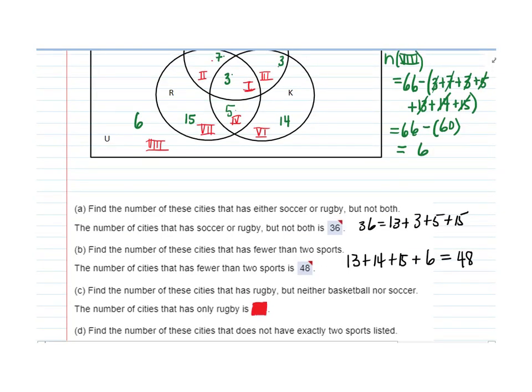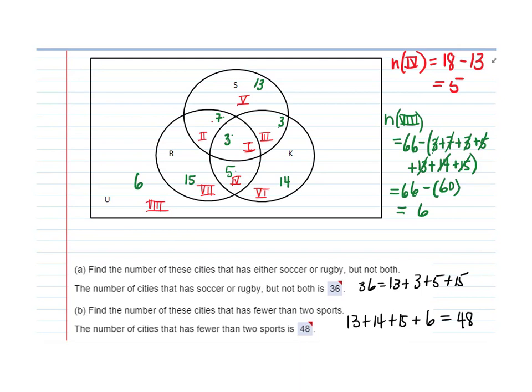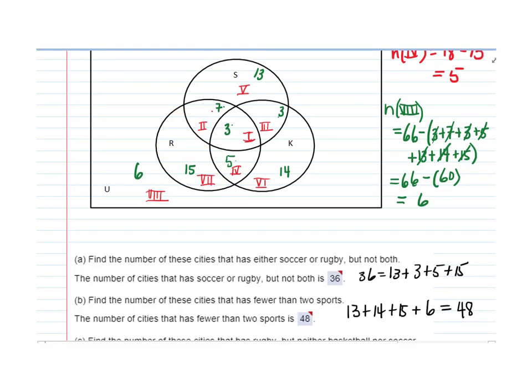Okay, next we're going to find the number of cities that have rugby but neither basketball nor soccer. Alright, so to have rugby but neither basketball nor soccer means it's in the rugby circle, but it's not even touching the soccer or the basketball circle. So that only is region 7, which has 15.